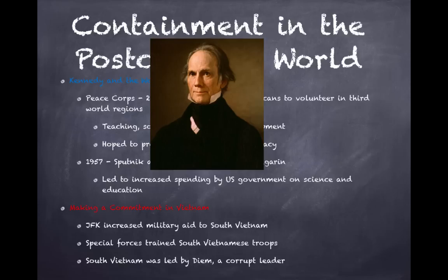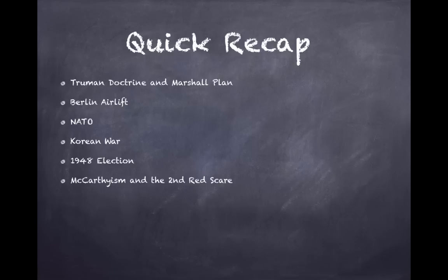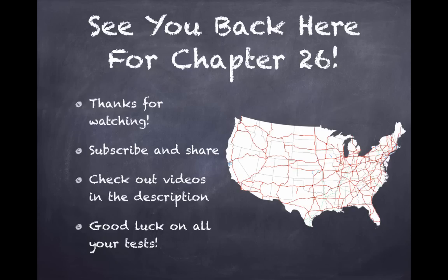Quick recap: know the Truman Doctrine, Marshall Plan, Berlin Airlift, NATO, the Korean War and its causes and effects, the 1948 election, McCarthyism and the Second Red Scare, Eisenhower's foreign and domestic policies, the election of 1960, and Cuba in the context of the Cold War. That wraps up Chapter 25 — see you in Chapter 26!